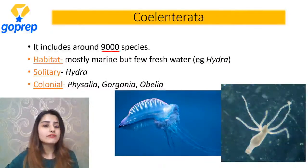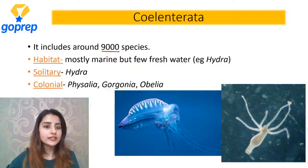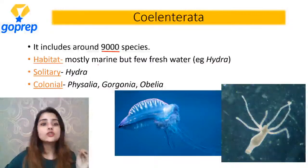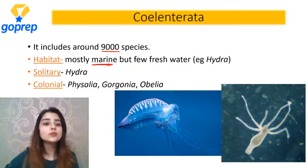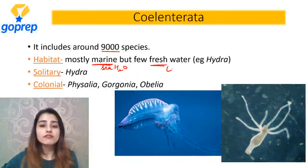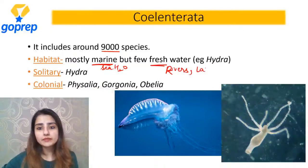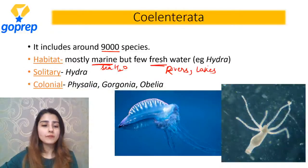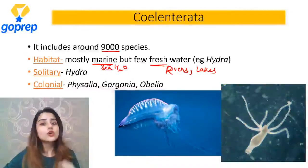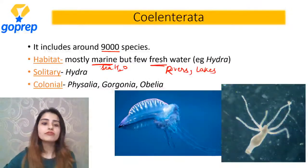Around 9,000 to 9,500 species are there in the phylum Coelenterata. Mostly ye sab aquatic hain - aquatic mein bhi maximum they are marine water animals, matlab seawater mein milte hain. But there are few Coelenterates which are freshwater in nature - freshwater matlab rivers aur lakes mein milenge. Example is going to be hydra. So they all are aquatic, maximum marine water, kuch freshwater.